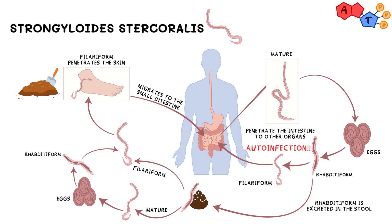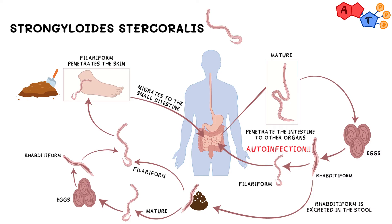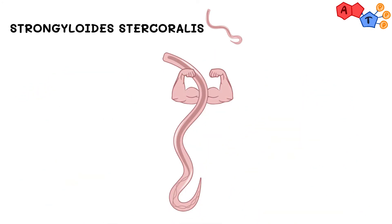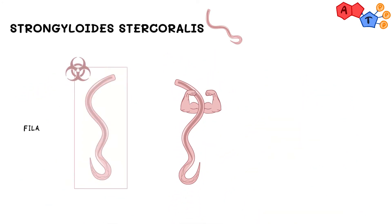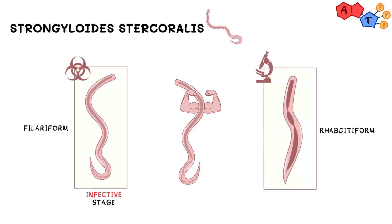It might sound a bit complicated but look at this beautiful illustration and I'm sure you'll understand it. For the clinical practice and exams, the most important thing to remember is that filariform larvae is the infective stage while rhabditiform larvae is the diagnostic stage.